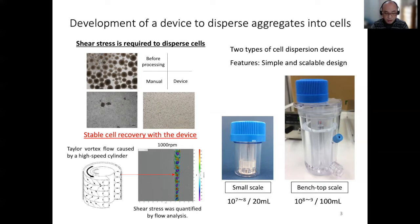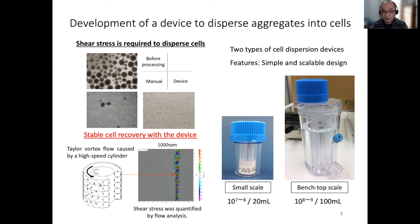If the cylinder rotates too fast, turbulence will occur and damage the cells. At low speed, sufficient shear stress will not be obtained for cell dispersion. We designed the device so that the liquid flow becomes a Taylor vortex in the region of optimal rotation speed for cell dispersion.